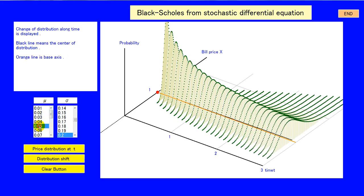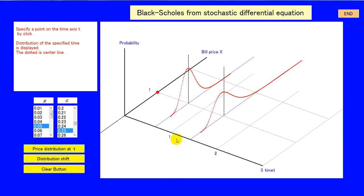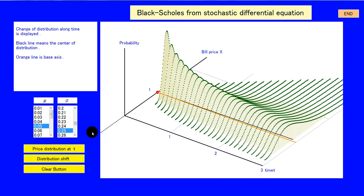We set mu as 0.05 and sigma 0.25. The initial definite price began to distribute gradually as the time goes on.